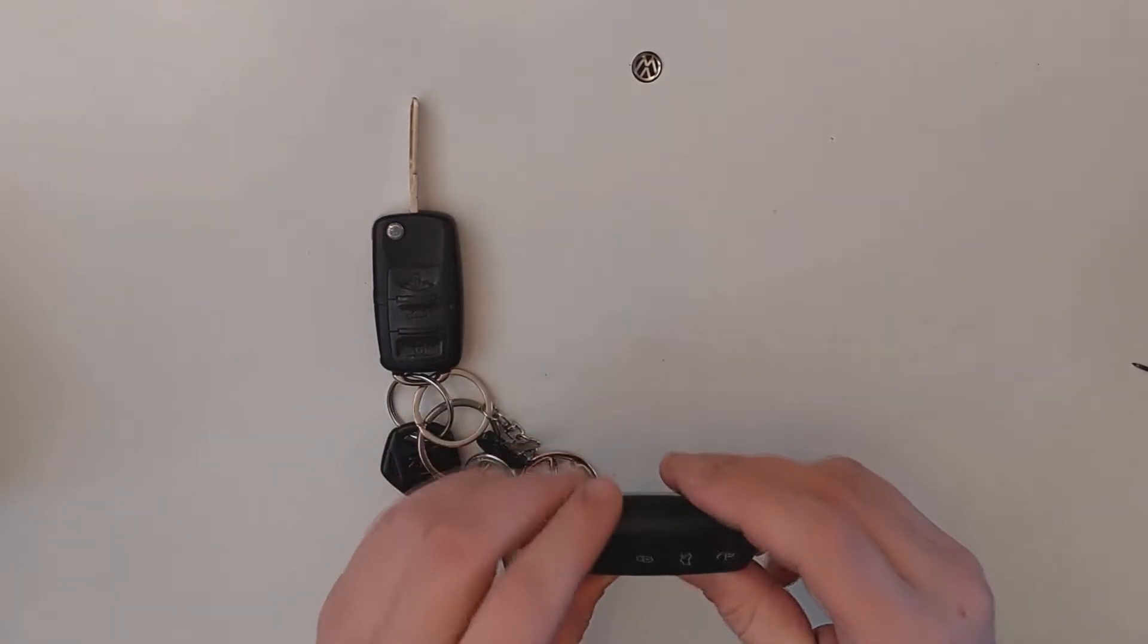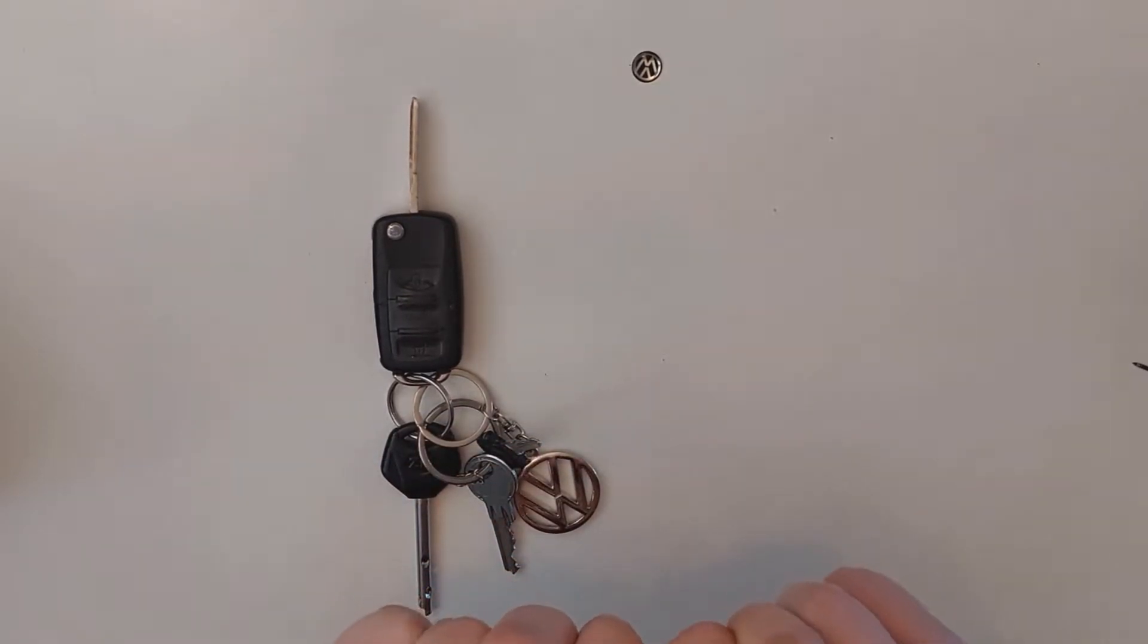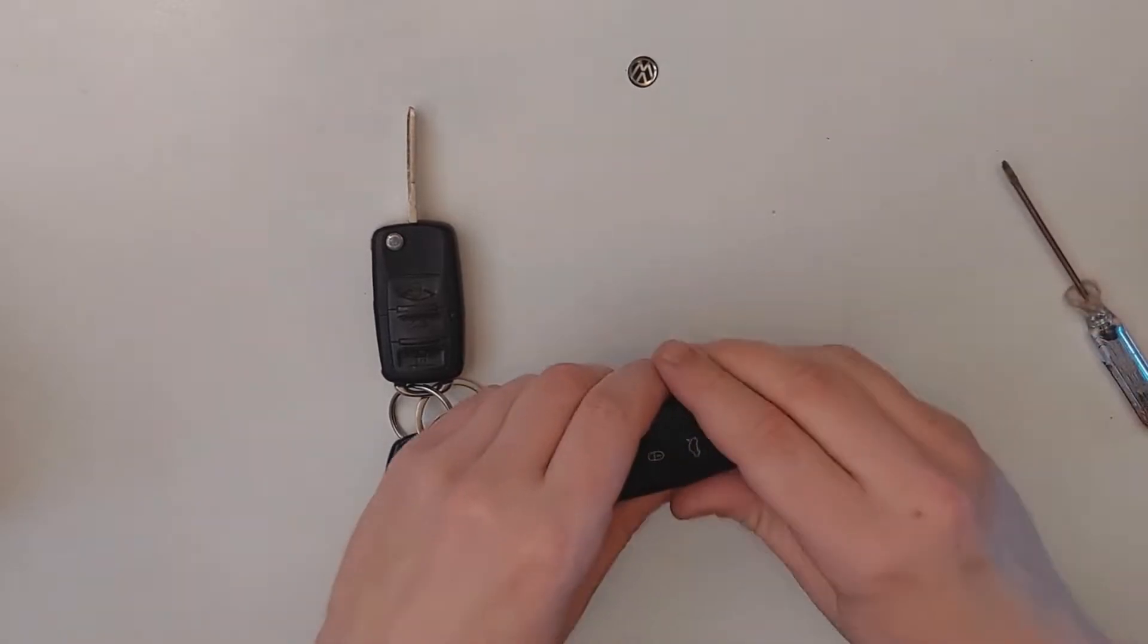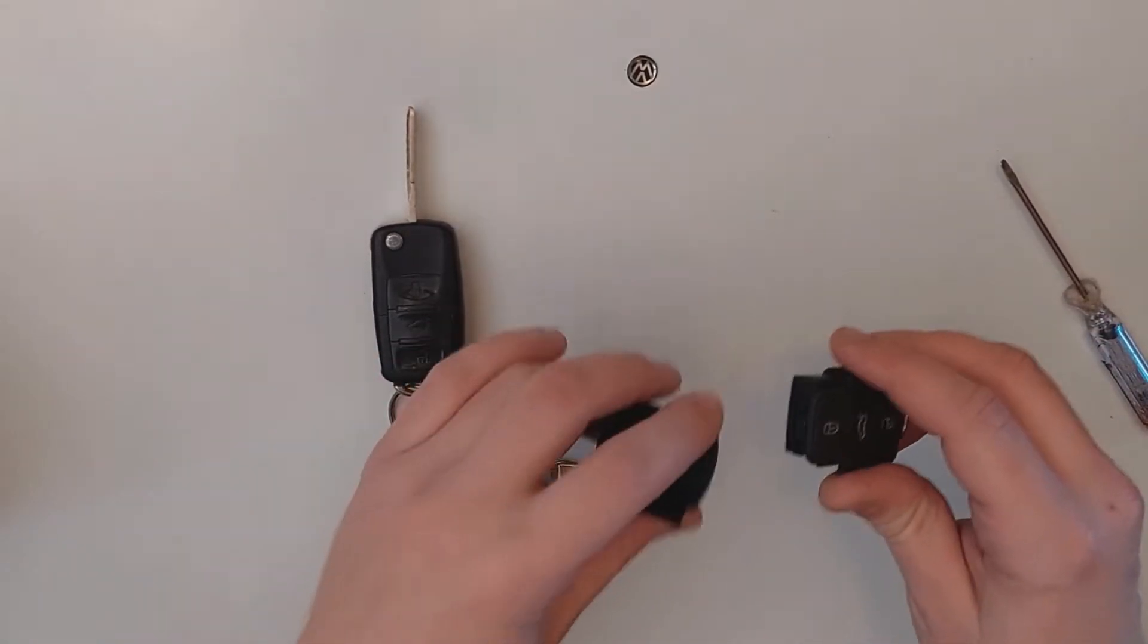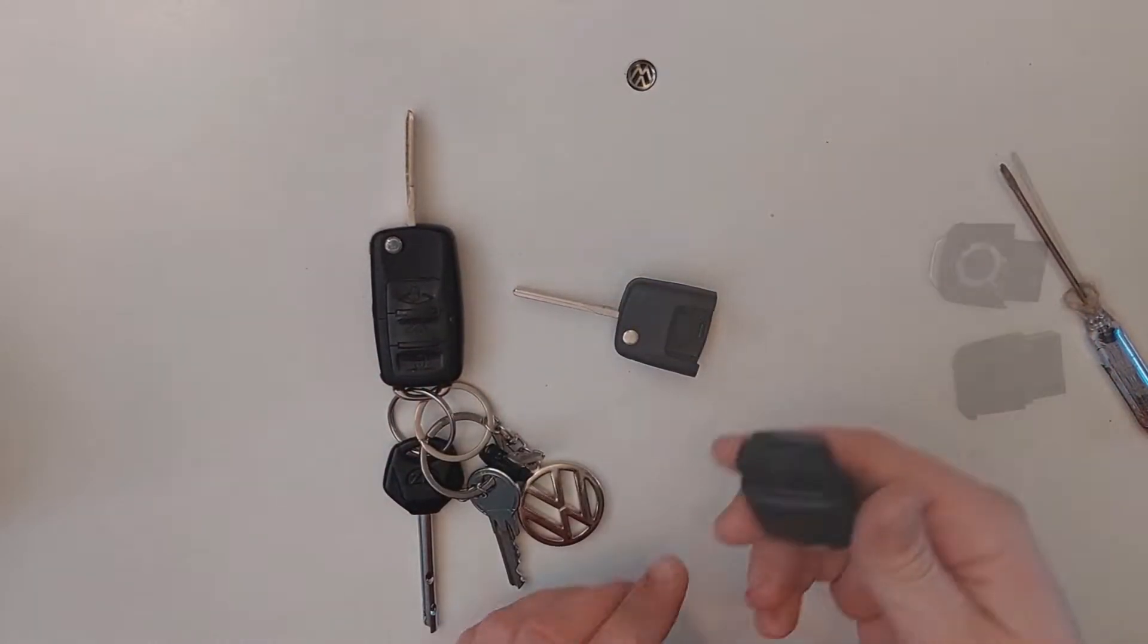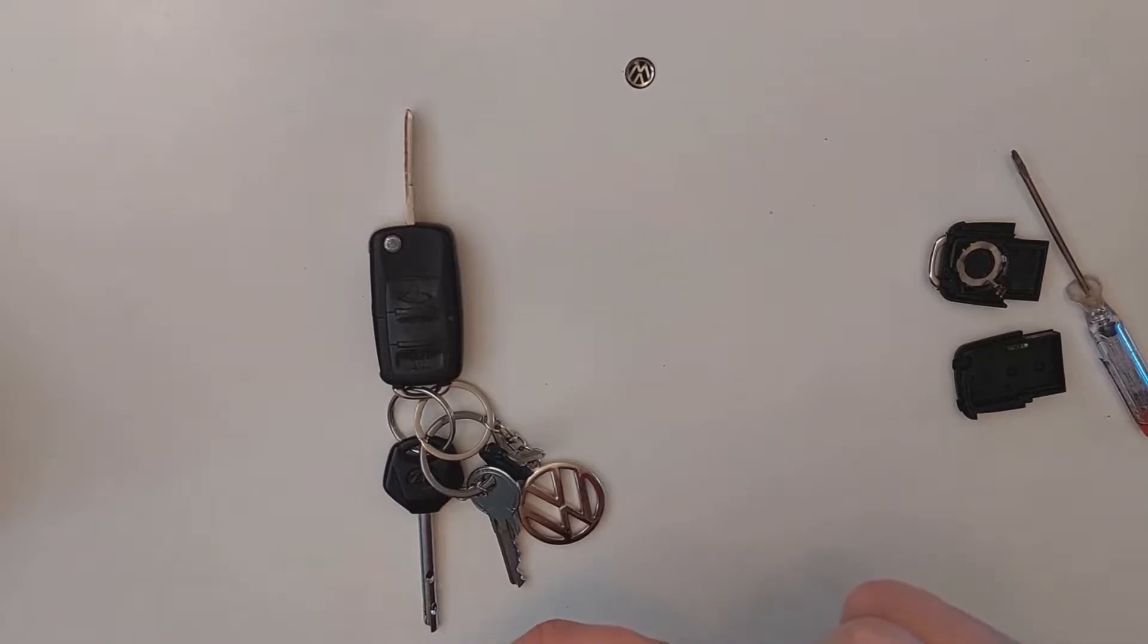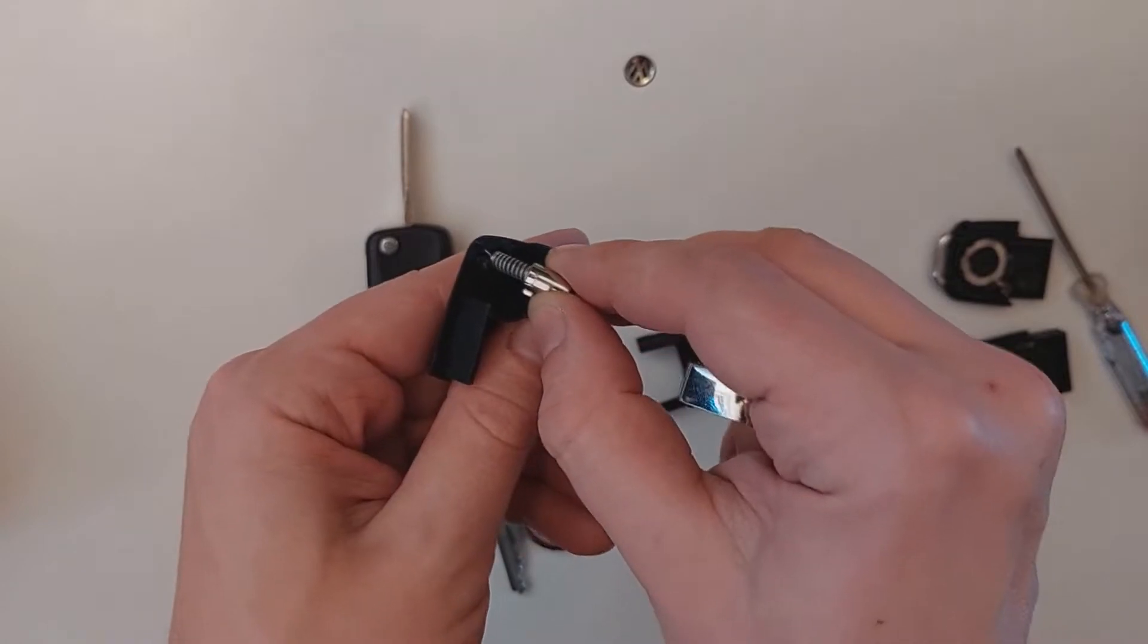First, we need to disassemble this new key so we can see how everything works. Now I've separated the key into two pieces, and we will remove the spring and button.